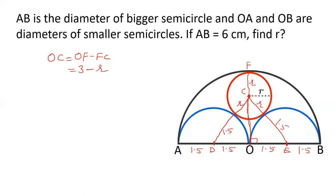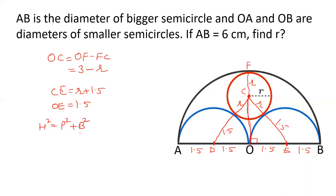And O — this value is 1.5. And here I have a right angle triangle. In a right angle triangle: hypotenuse squared equals perpendicular squared plus base squared.